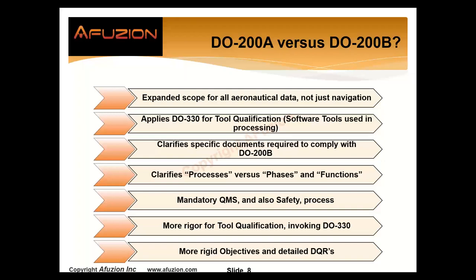Tools are software programs used to develop, verify, and assess data. Data generation, processing, and transmission use these software tools. Do we trust these tools? In aviation, who do we trust? No one. So if we want to trust a tool, we must qualify it. If we don't qualify the tool, we review every instance of every output. DO-330 for tool qualification is very important.